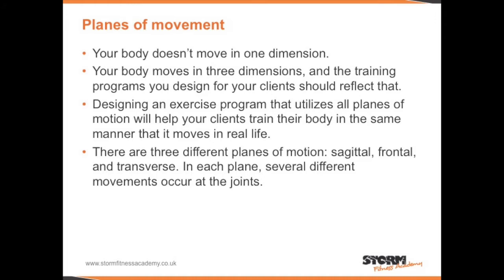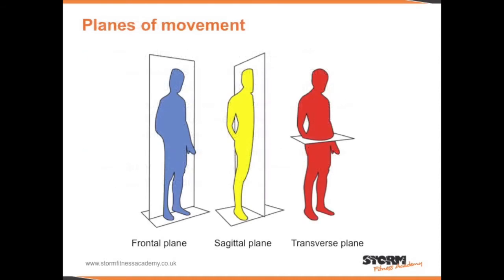In each plane several different movements occur at the joints. An illustration showing the three planes of movement: first the frontal plane, second the sagittal plane, third the transverse plane.